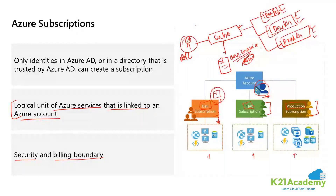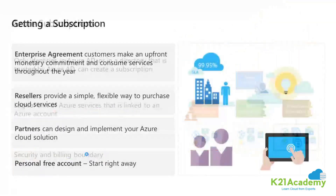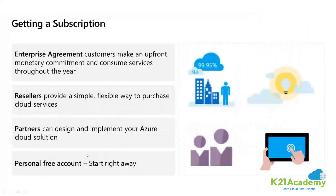When we discuss the security aspect, we'll cover Azure Policy and how it works as a security boundary. As of now, a subscription works as a billing boundary — that's what we are trying to understand. Moving to the next slide, it shows how you can get and buy a subscription.